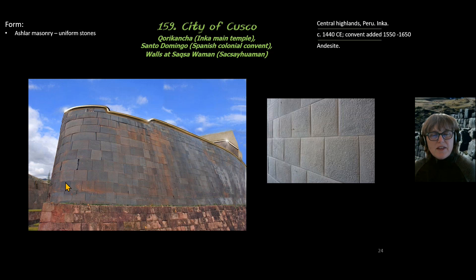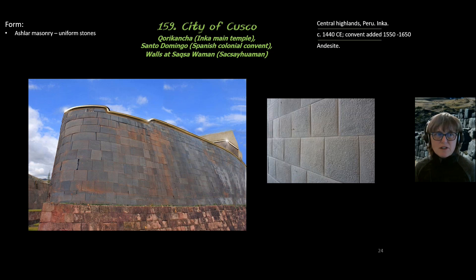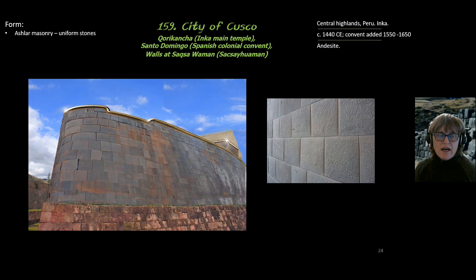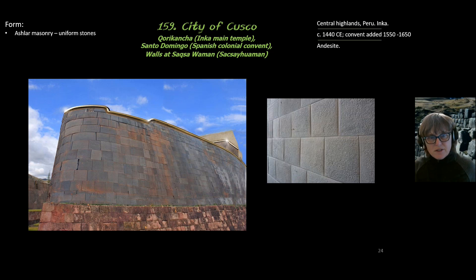The stones used to create the Coricancha were carved to be uniform — this is called Ashlar Masonry, where we take uniform stones and put them together. The Inca went a little further and did not use any mortar between these stones; it's just stone resting on stone. The benefit of that is that when there's an earthquake, which there were many, these stone walls would just move rather than being held rigid with cement.